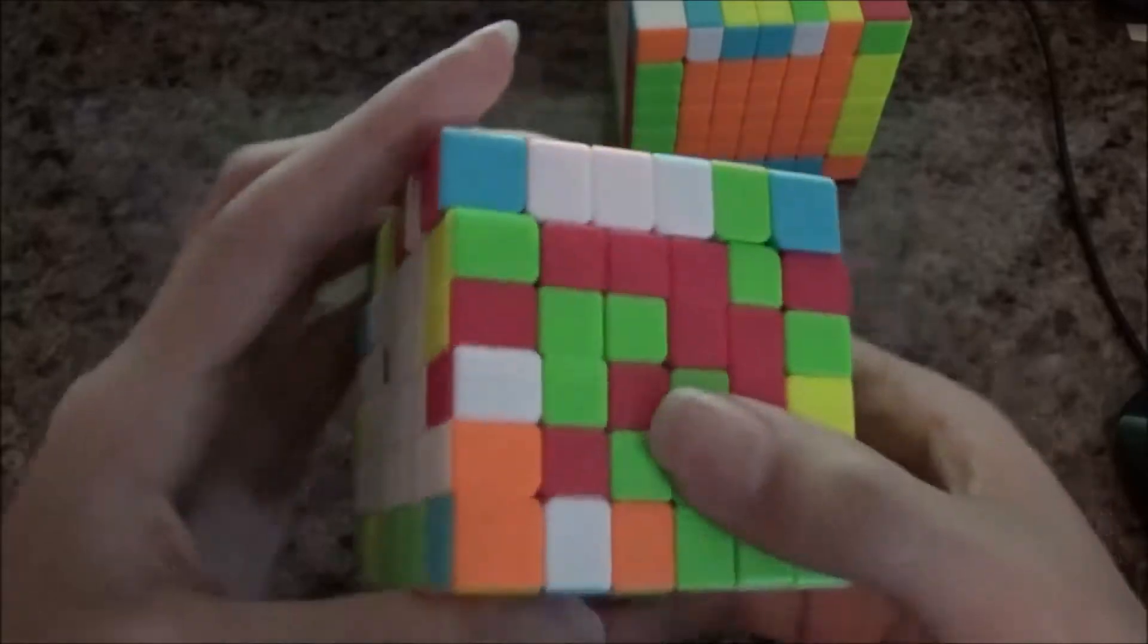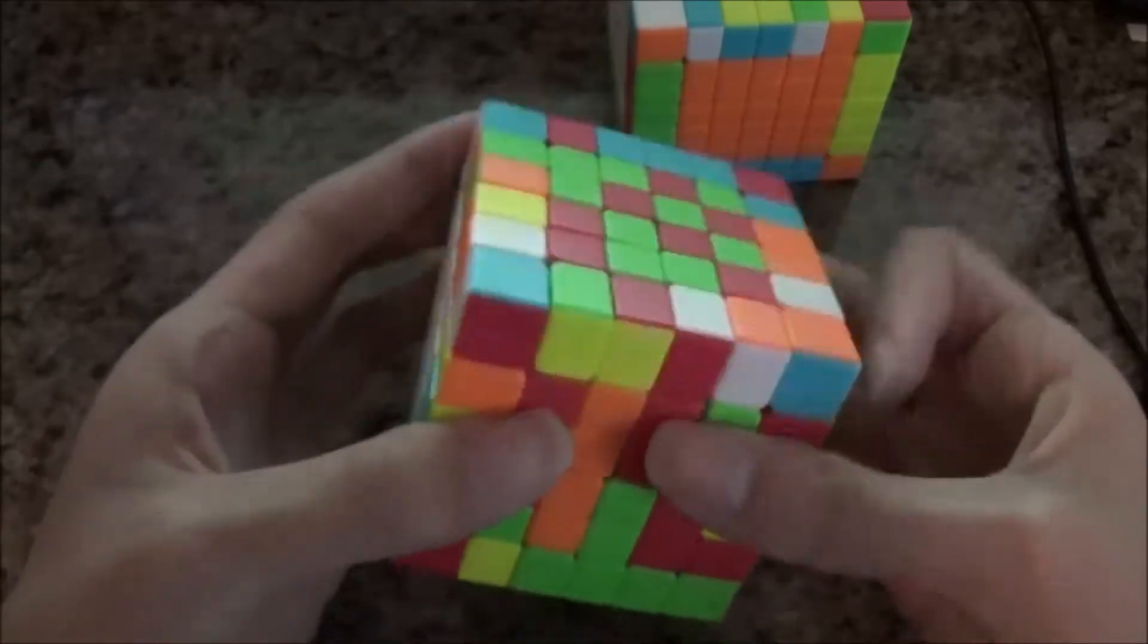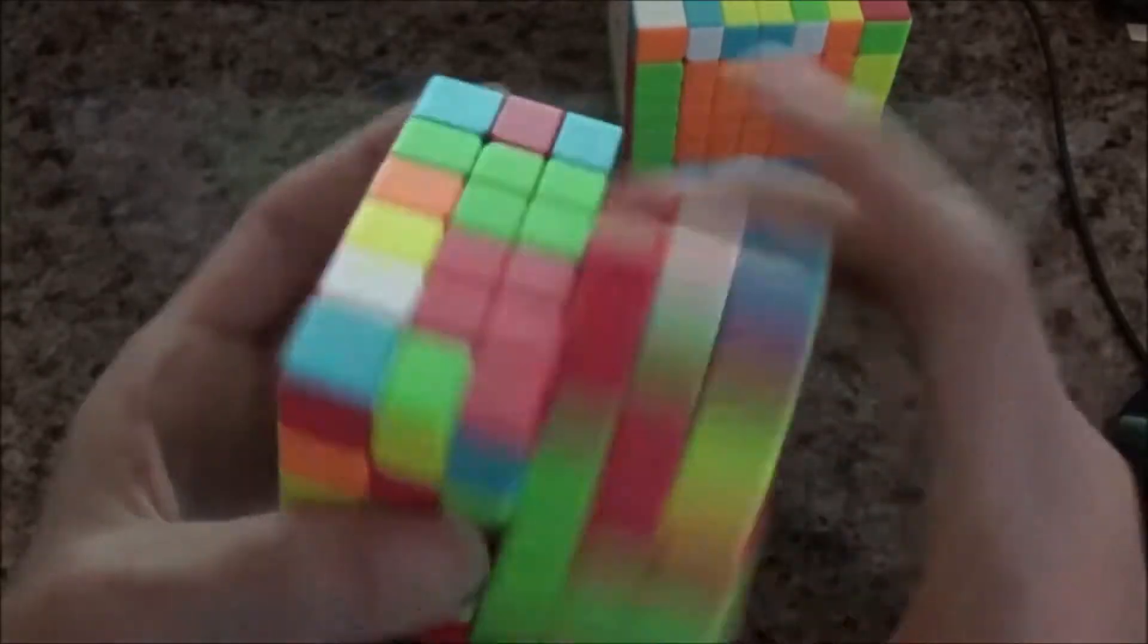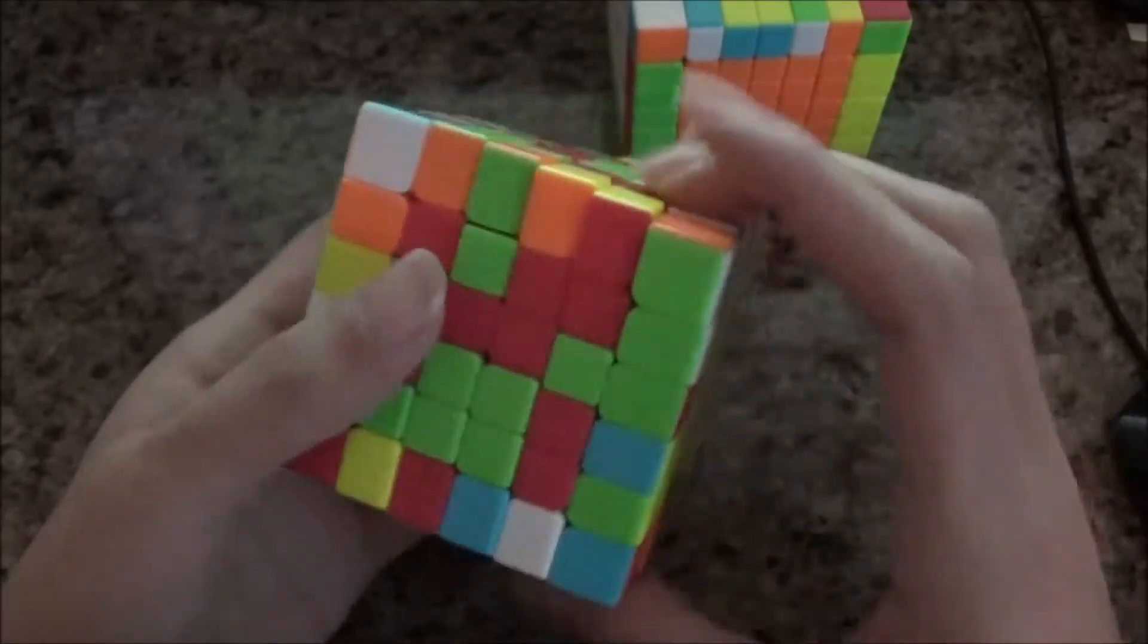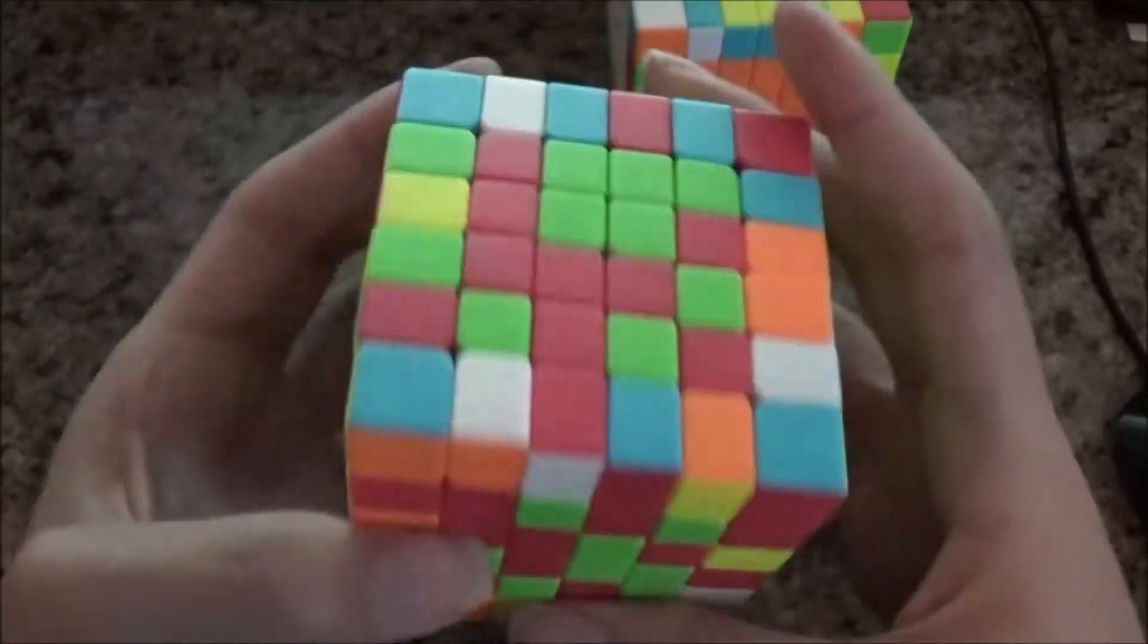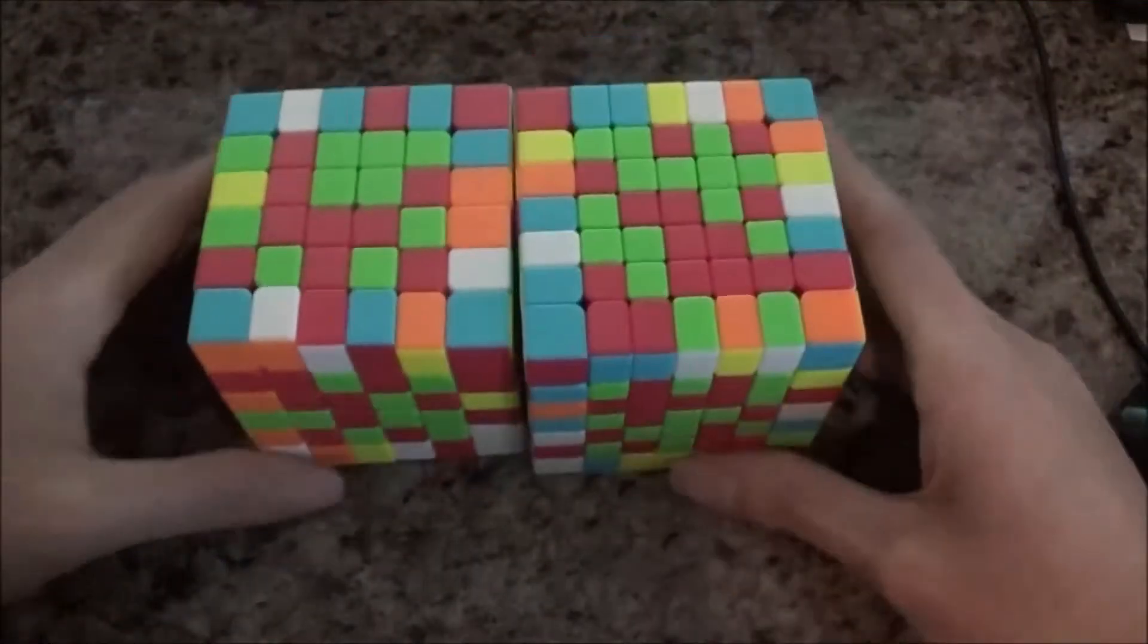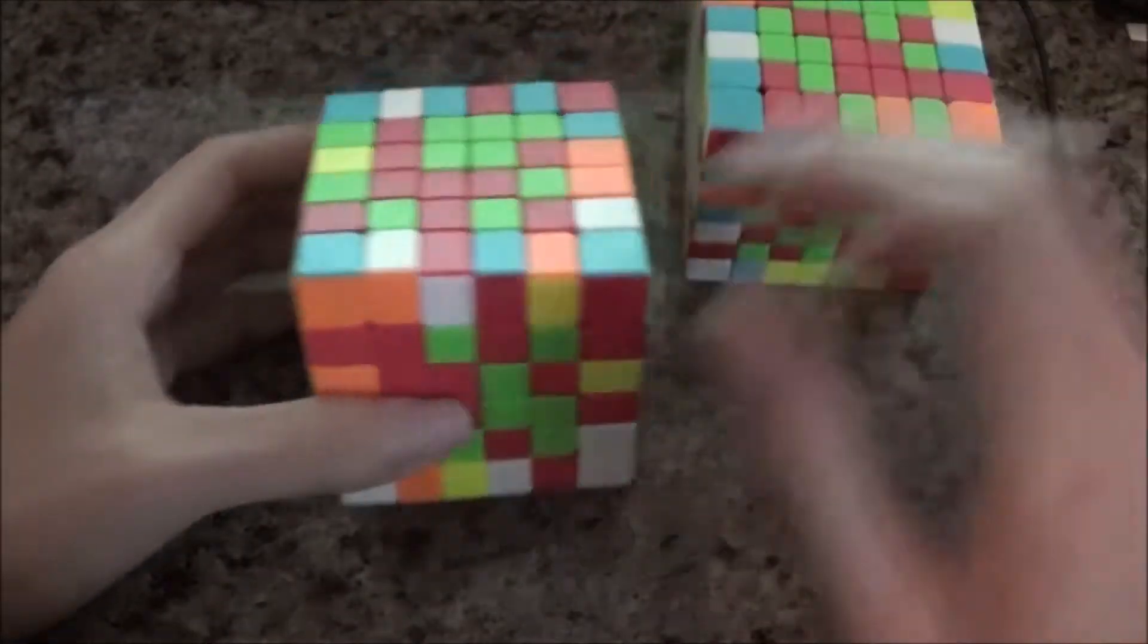If I can scramble this correctly, that is not a good scramble, also not a good scramble. Whatever, I'll just leave it like that. So we have 6x6 and 7x7, I'll start with 6x6 first.